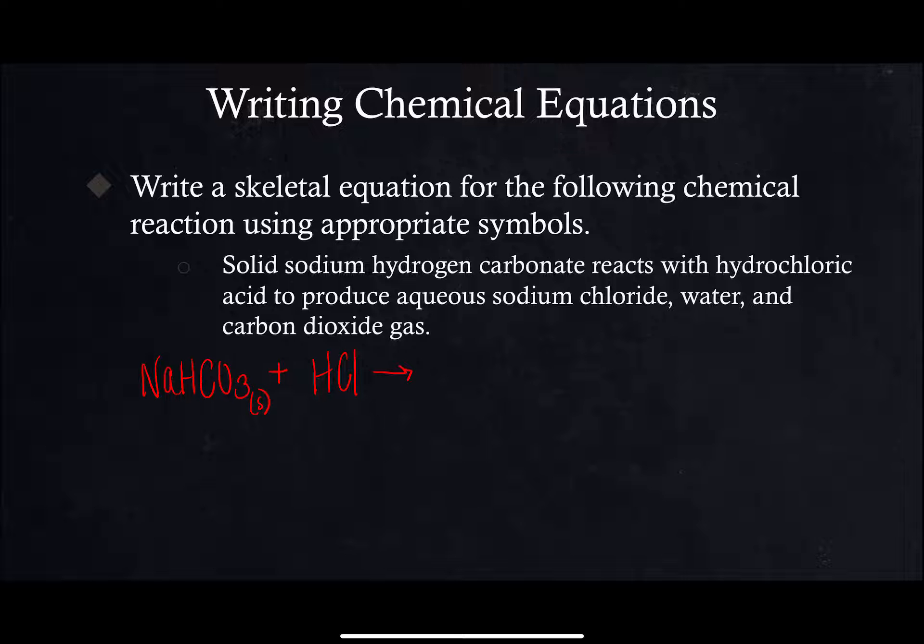So that's going to be NaHCO3 (s) plus HCl to produce aqueous sodium chloride, NaCl (aq), plus water and carbon dioxide gas. That's how you would write that. I know that hydrochloric acid is a liquid so I'm going to put liquid there. Generally if they have this state of matter you will see it on all of the parts of the equation.